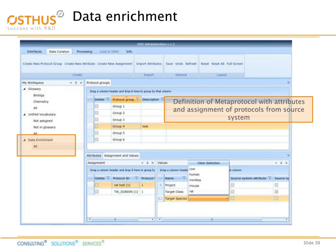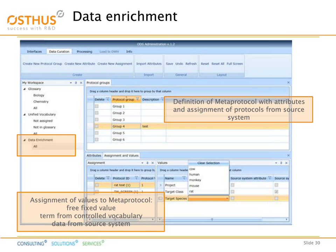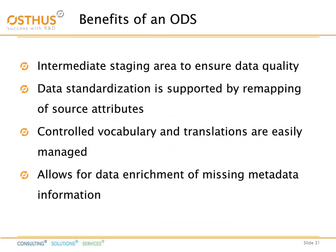This is shown here on the slide, where we bridge different biological assays to a concept which we call a meta-protocol, which brings together different protocols in one overarching concept. So what are the benefits of an operational data store? First, it works like an intermediate staging area, and by that it ensures data quality.